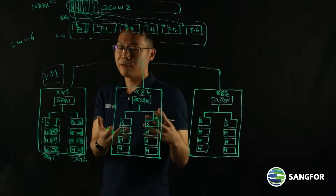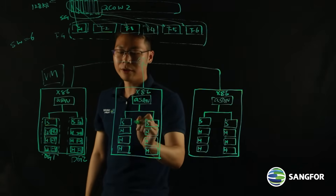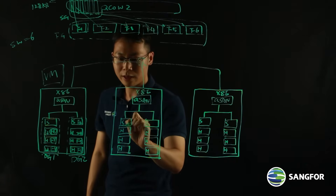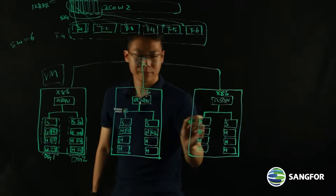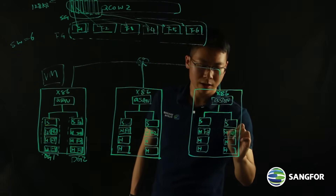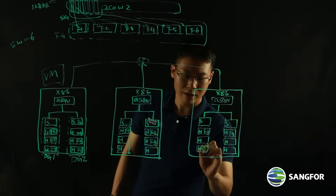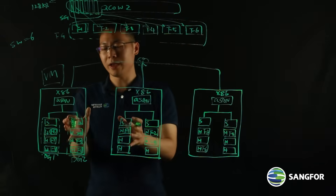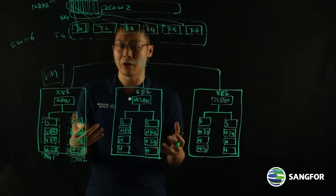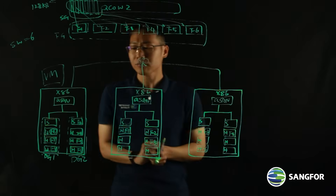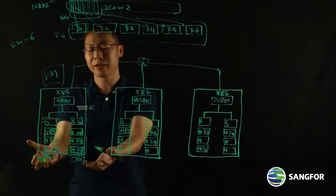There is an aggregated fragment group of the VM's data, and there is also a dispersed fragment copy of the data — for example F1, F2, F3, F4, F5, and F6 on other nodes. So I have an aggregated copy of my data and also a dispersed copy. Because we use multiple copies on ASAN, there are at least two copies of your data. In this case, the VM reads from the local aggregated fragment group.